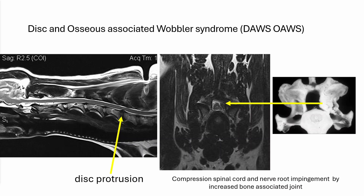This is usually disc and osseous associated wobbler's syndrome occurring simultaneously. Here in this Great Dane, there is an innocuous-looking disc protrusion, but there is high signal in the cord above it. On cross-section, the spinal cord is in a triangle shape due to bone compression. Another image shows massive bony protrusion from the facets compressing the spinal cord and impinging the nerve roots.